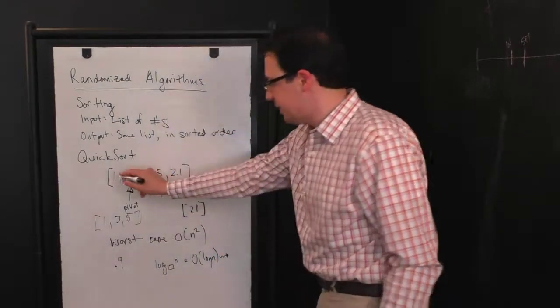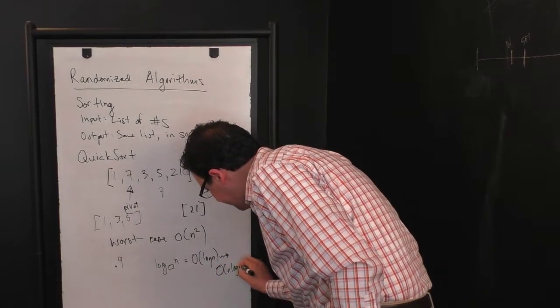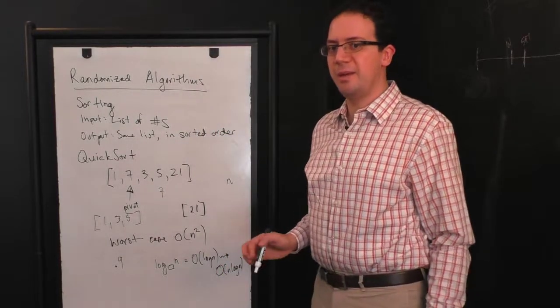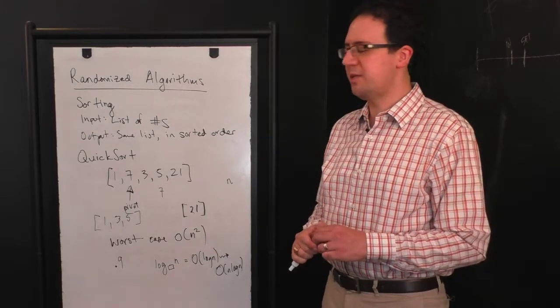Which since each scan through the list takes N, this gives us, again, an order N log N expected time with high probability. And this is usually the kind of thing we're looking for in a randomized algorithm.